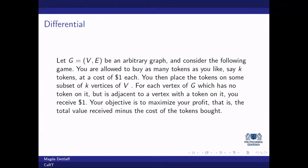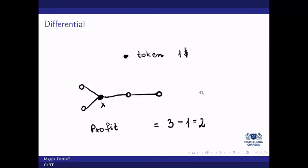We can buy tokens, and we have to pay one dollar for each token. We can place tokens in the vertices, and if a vertex is a neighbor of a token, we can receive money — one dollar from each such vertex. Consider this simple graph on five vertices. We buy one token for one dollar and place it in vertex X. We can obtain one dollar from each of its three neighbors, so we obtain three dollars. We spent one dollar for the token, so the profit for this set of tokens is two dollars.